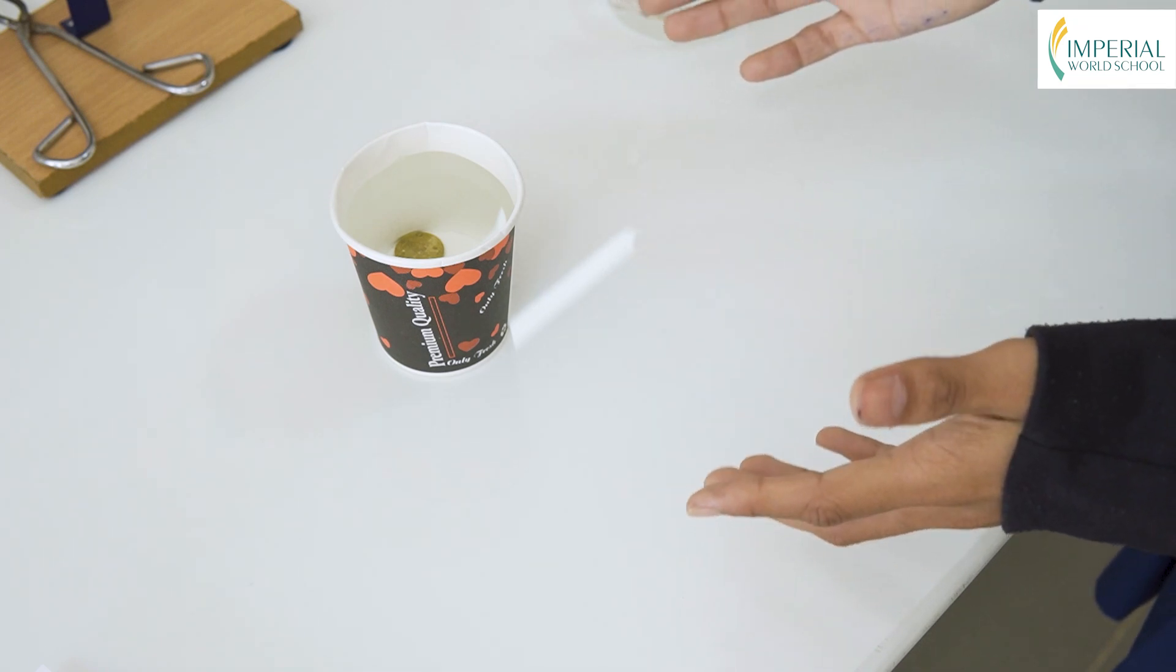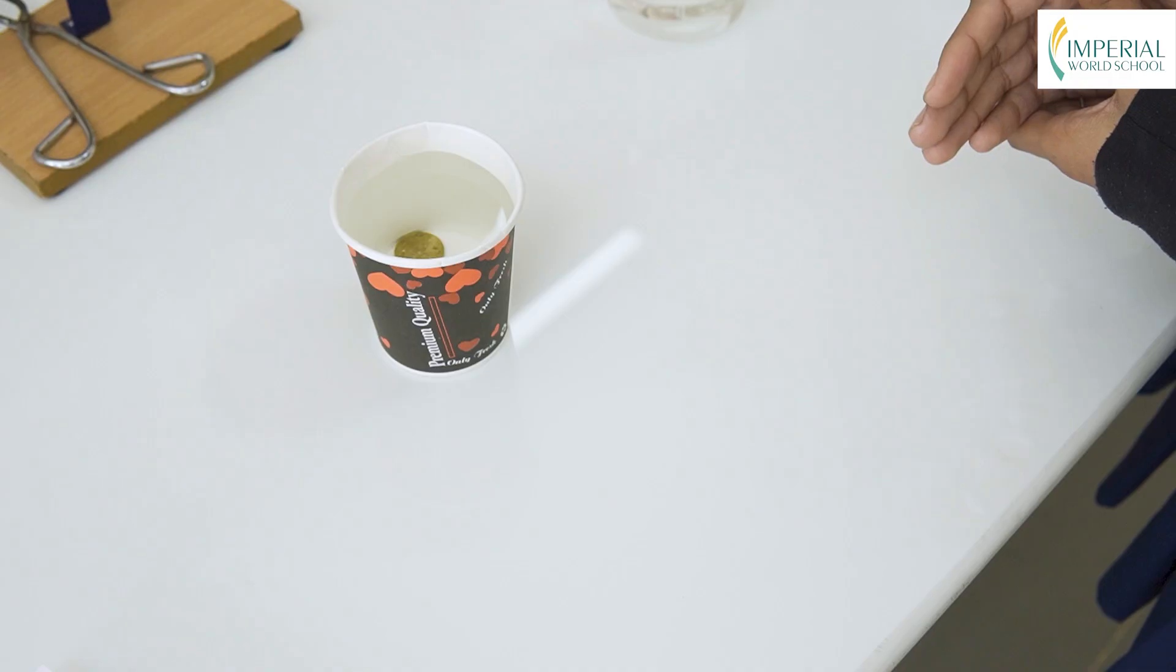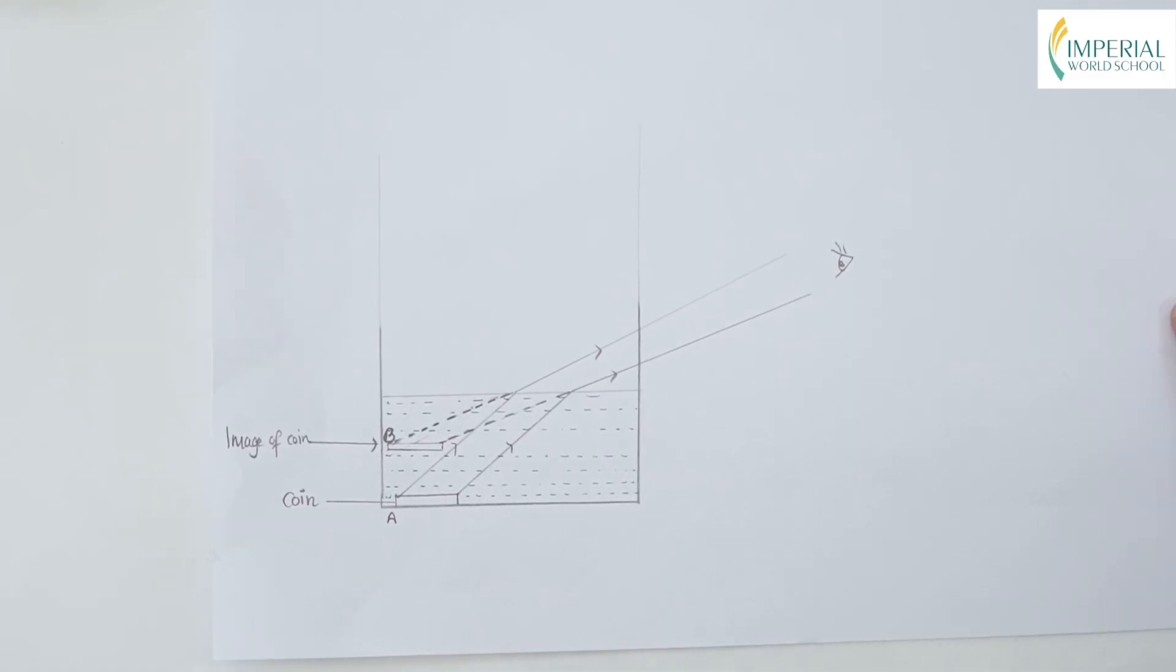The coin that you see now is not the actual coin, but the image of the coin. Let me explain this trick with the help of a ray diagram.